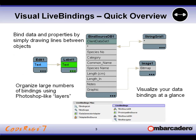Visual LiveBindings in RAD Studio XE3 provides you with a visual LiveBindings designer surface. It enables you to visually bind component properties and members — you can bind data and properties simply by drawing lines between objects. For example, with edit one's text property and label one's text property, clicking on edit one text highlights bindable members in green. The three-dot menu in green indicates additional properties you can expose and add to the designer.